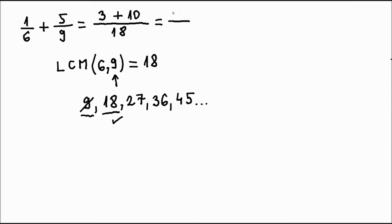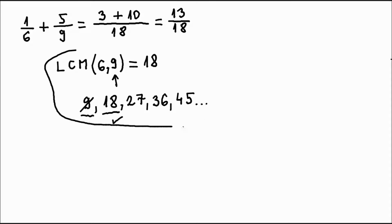Let's now finish adding them. Three plus ten is fourteen, and we simply copy the denominator eighteen. This way we got our solution — we have added these two fractions. You don't have to write the bottom part where we are looking for the common multiple. Let's go through this calculation once more.